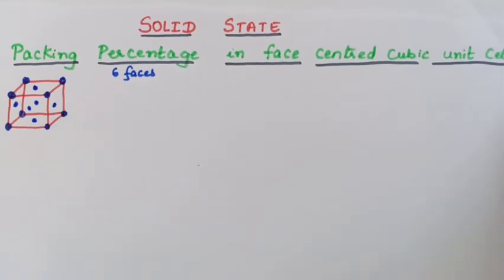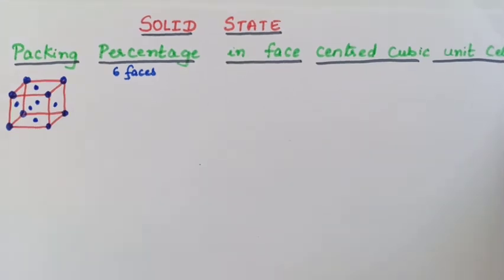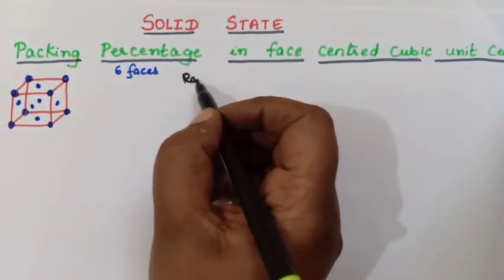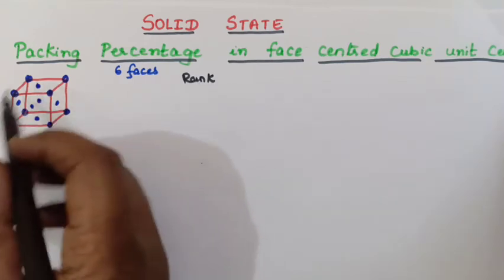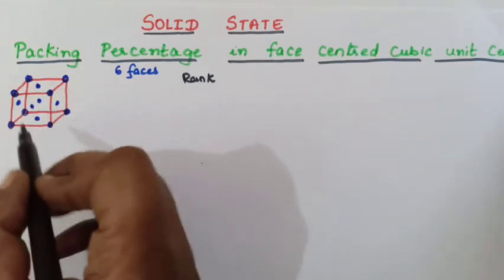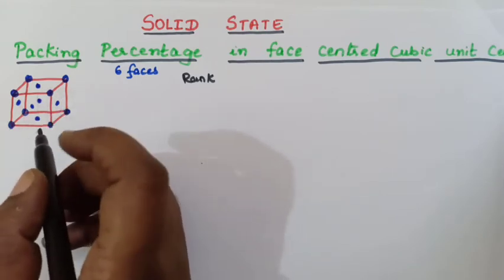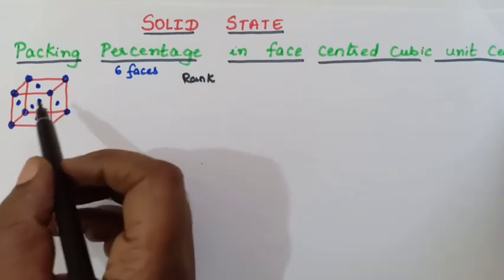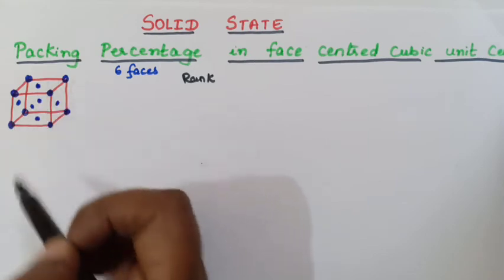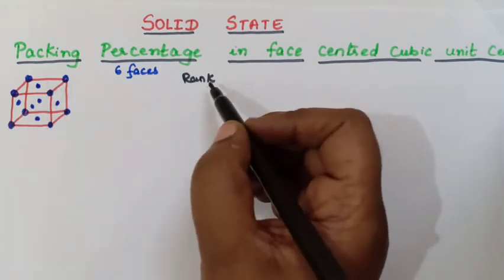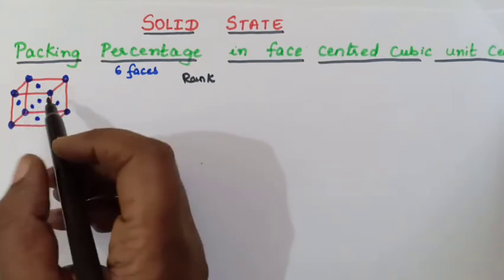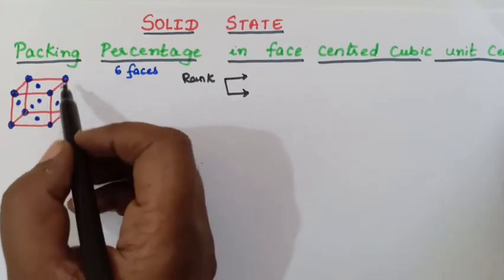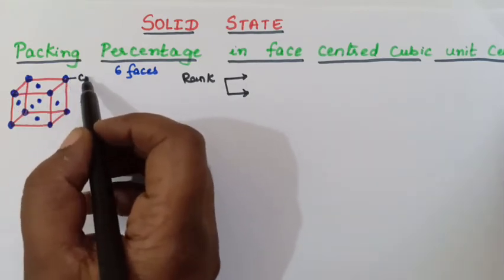So totally there are 6 particles in the face. So the first step will be we have to calculate what is the rank of this FCC unit cell. I have taught you how to calculate the rank in the first video, so if you have not watched you can watch in the playlist. There are 2 types of particles here: the particles present in the corner, and the particles present in the face.